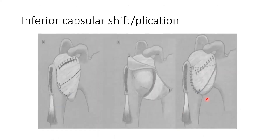The inferior capsular shift procedure: the capsule is lax, so you make a T-incision on the anterior capsule, open it up, then plicate it — meaning overlap the capsule so it tightens. This reduces the capsular volume.